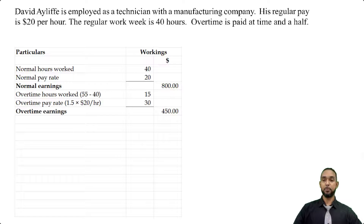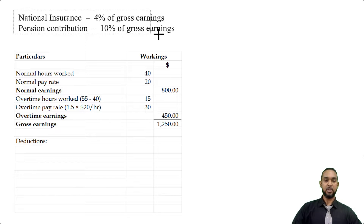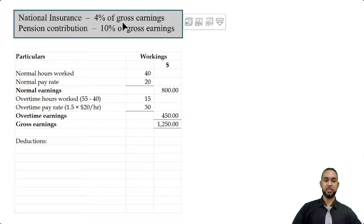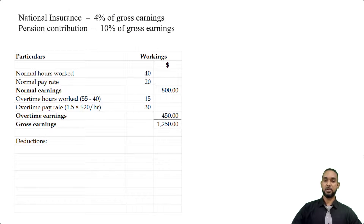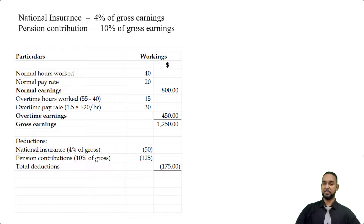15 hours by $30 per hour gives us $450 overtime earnings. Adding the two earnings figures — $800 normal and $450 overtime — gives us $1,250 gross earnings. Now for deductions: national insurance is 4% of gross earnings — so 4% of $1,250 is $50. Pension contribution is 10% of gross earnings — so 10% of $1,250 is $125. Adding those two together gives us total deductions of $175.